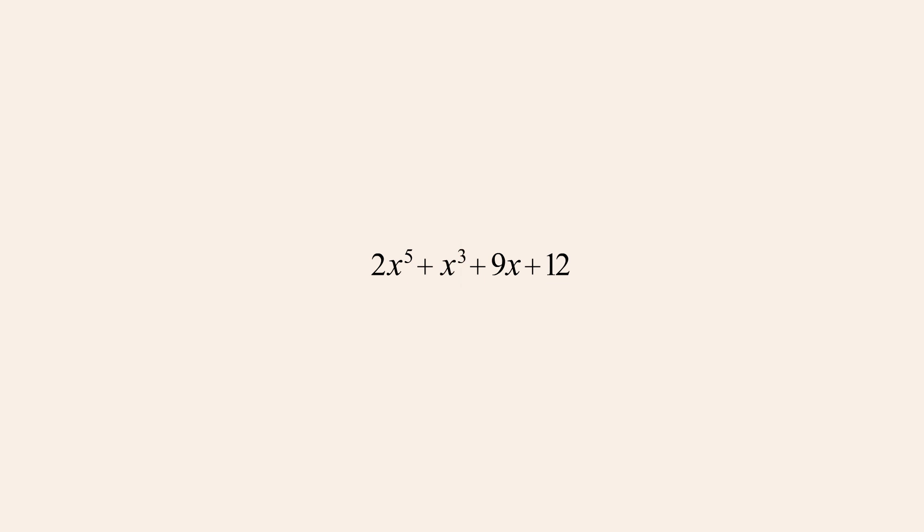Since polynomials are ordered so that the exponents decrease going from left to right, the first term, called the leading term, always contains the largest exponent. The value of that exponent determines the degree of the polynomial. Therefore, this expression would be called a fifth-degree polynomial.